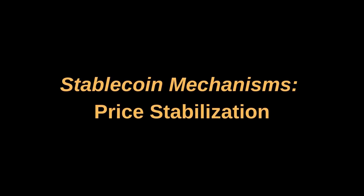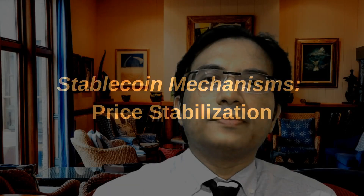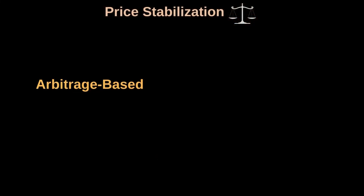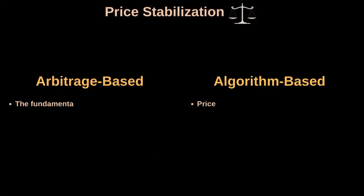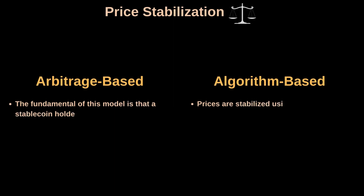Coming to price stabilization, asset-backed stablecoins and algorithmic stablecoins use different mechanisms to stabilize the prices. We can broadly classify the mechanisms into two groups: arbitrage-based mechanisms in the case of asset-collateralized stablecoins, and algorithm-based stabilization in the case of algorithmic stablecoins.